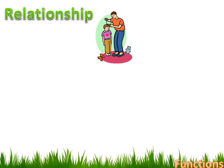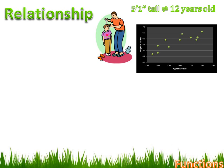Here's an example of a relationship. There's a relationship between height and age. Younger kids are usually shorter than taller kids. But it's not a precise relationship — it's not like you could say that everybody that's 5 feet 1 inch tall is 12 years old. If you were to graph age against height, you'd see a relationship, but for any one age you might have two separate heights. There's a tendency for them to increase or decrease in a predictable fashion.